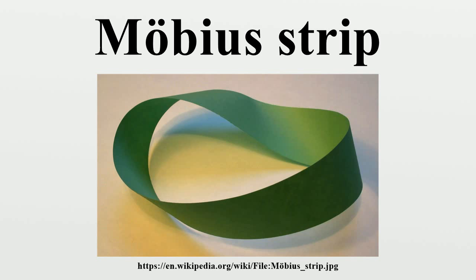Rather, mathematicians refer to the closed Möbius Band as any surface that is homeomorphic to this strip. Its boundary is a simple closed curve, i.e., homeomorphic to a circle. This allows for a very wide variety of geometric versions of the Möbius Band as surfaces, each having a definite size and shape. For example, any rectangle can be glued to itself to make a Möbius Band.